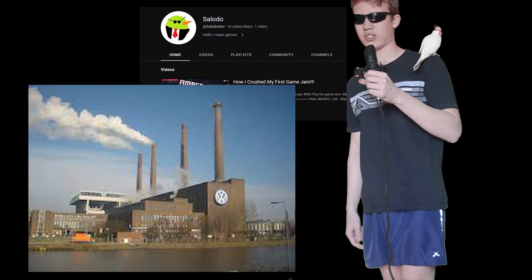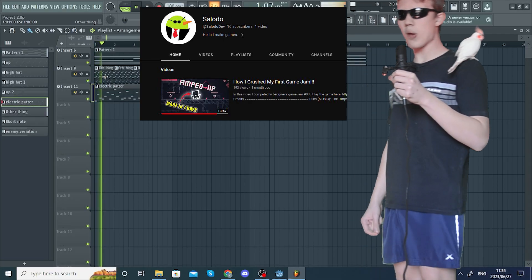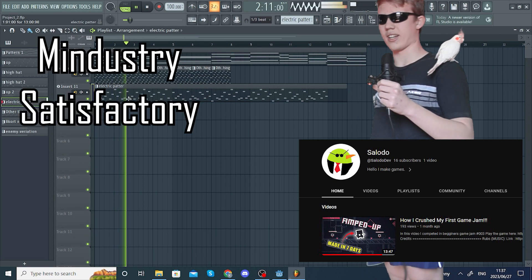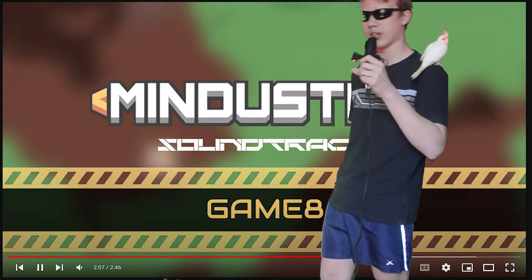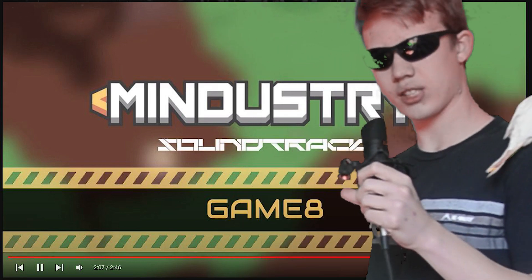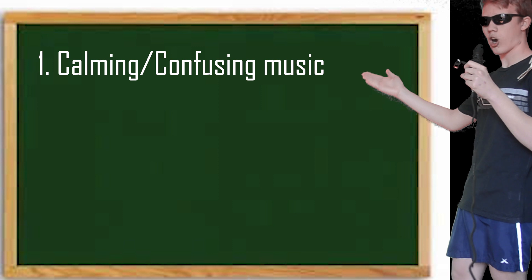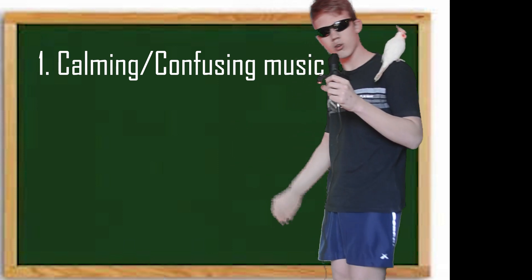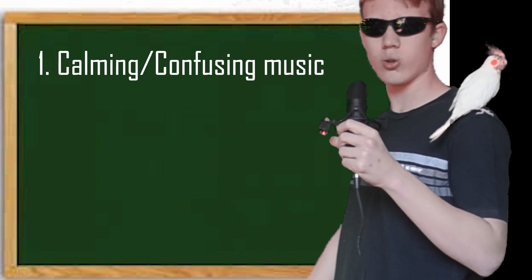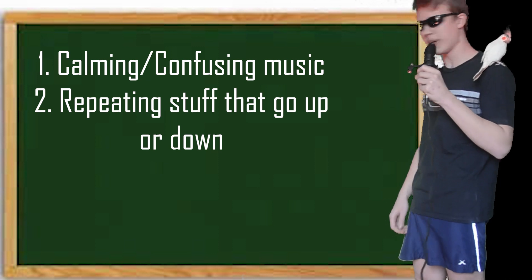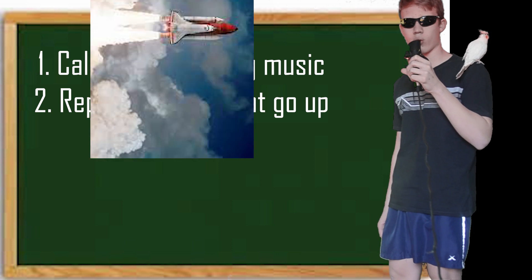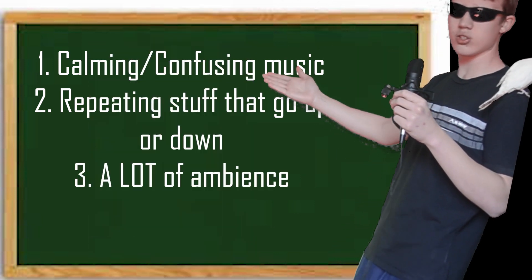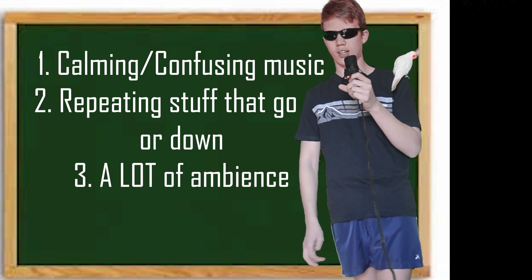After a few weeks, my friend wanted to make a factory type of game, and the moment I heard this I instantly thought of Satisfactory and Factorio. So I listened to their soundtracks and found a few things they all have in common that give it a nice factory vibe. Number one: usually a lot of calming or confusing type of music, with a lot of synth — basically cool electric sounds. Number two: it usually has a lot of repeating patterns that go up like a rocket or down like falling rockets. Number three: a lot of ambience, usually wobbly ambience. And with these factors in mind I started to work.